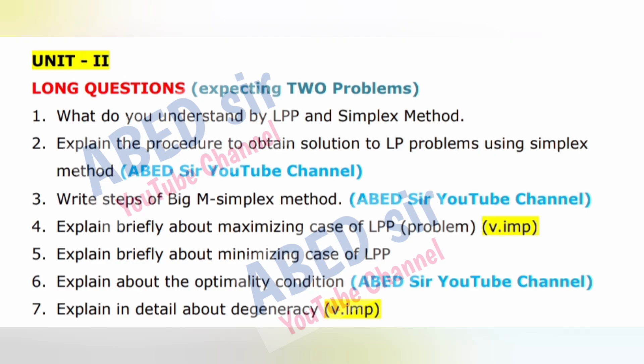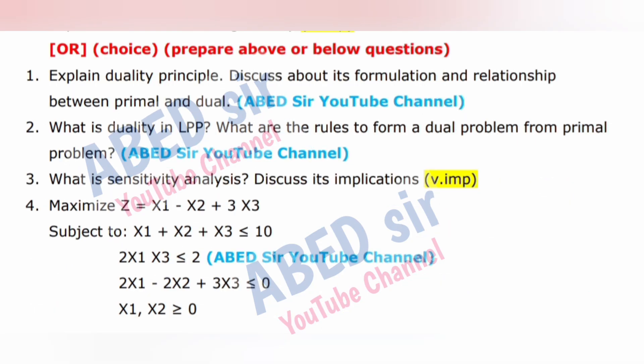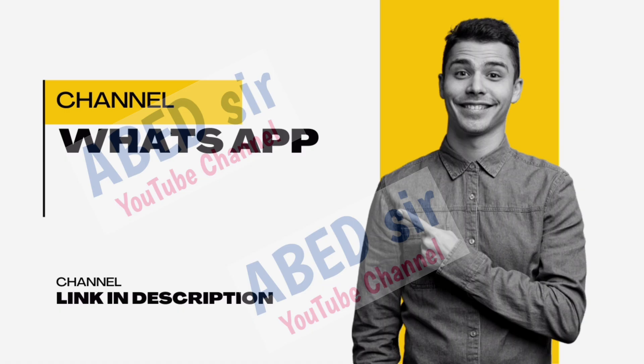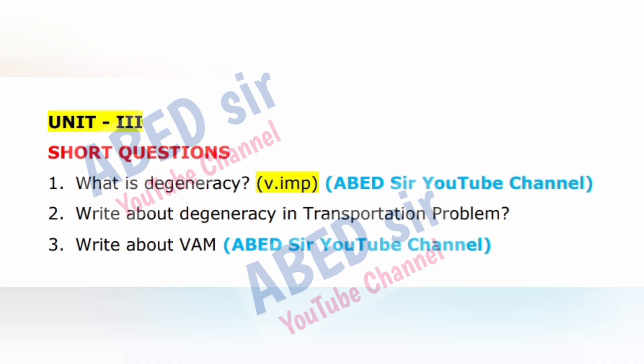Here are some smart writing tips to follow in the exam hall. First, read the question paper carefully and calmly. Second, do not write anything on the question paper except your hall ticket number. Third, begin your answers with the question you know best first — this builds confidence and creates a good impression.